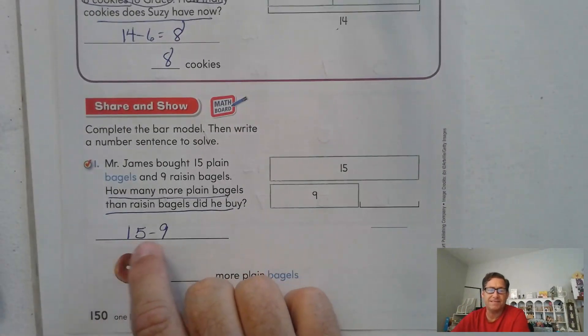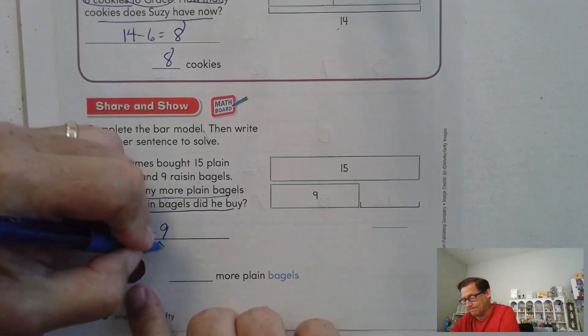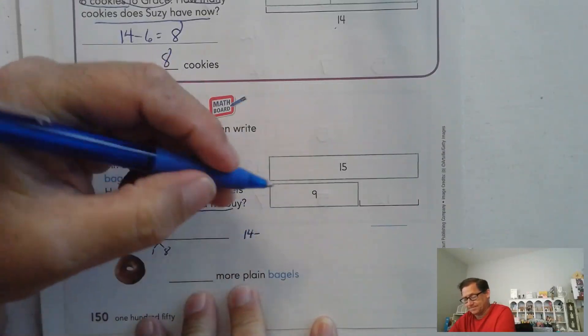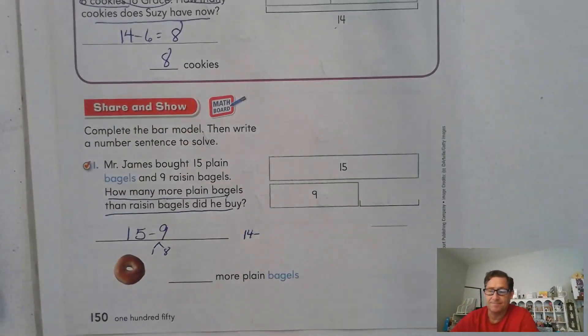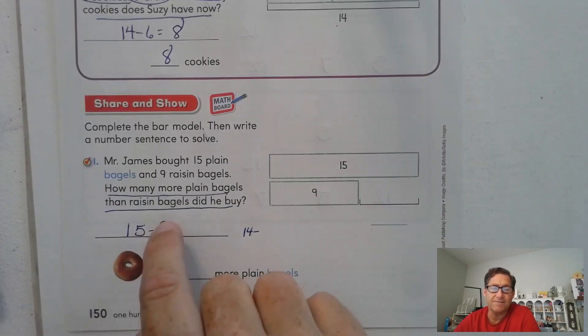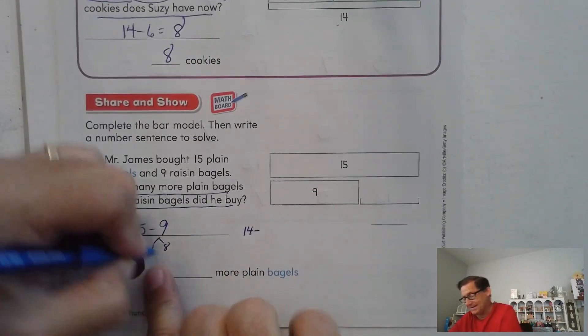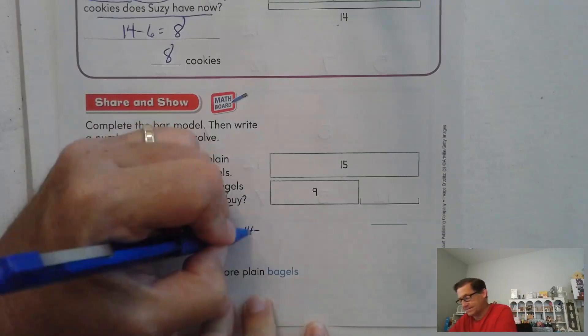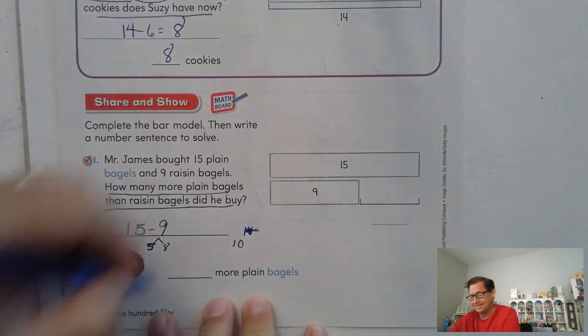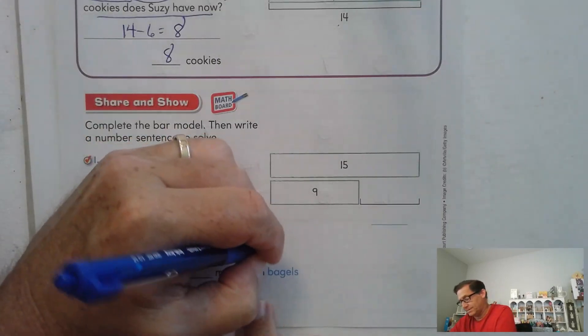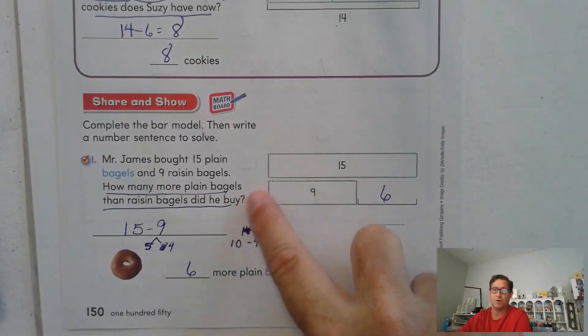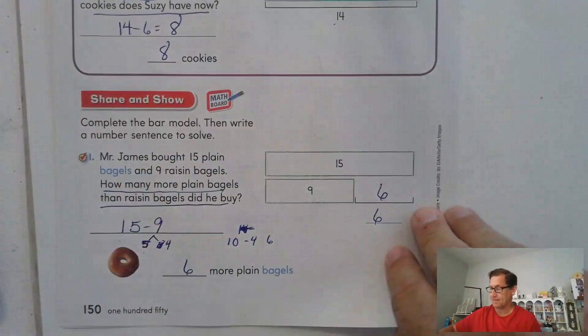Well, what do I have to subtract from 15 to get a 10? 1, right? So 15 take away 1 is 14. 14. I'm sorry. That's not correct. I caught myself here. 15 minus 9. What do we have to subtract from 15 to equal a 10? Not 1. 5. Okay? We're subtracting from 15, not from 9. 15 minus 5 is 10. 10 minus 4 is 6. So 6 more bagels. So if we put 6 here, we would have equal bars.